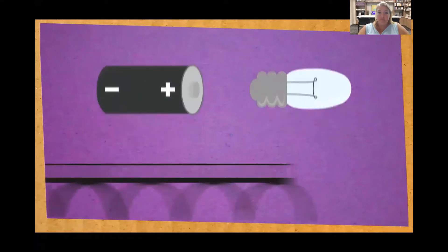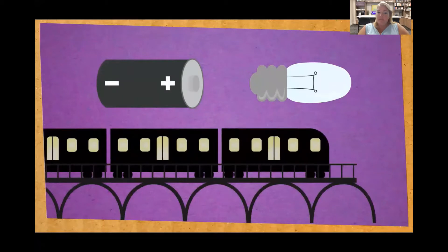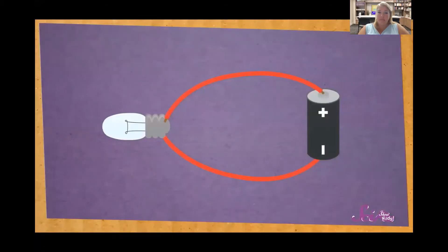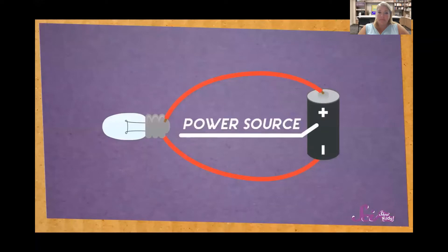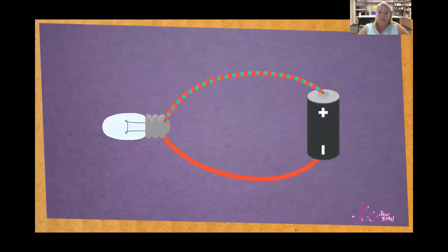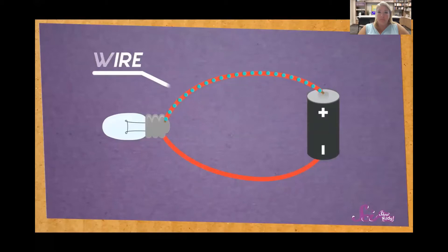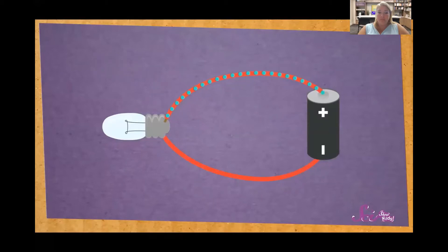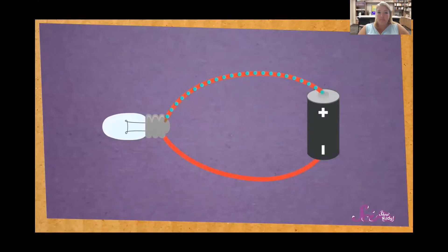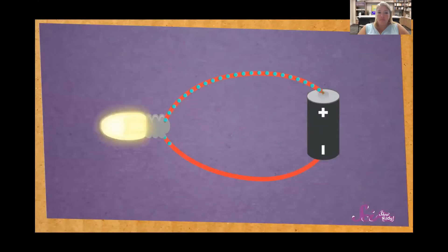It's a little like a train on train tracks. When there's no more track, the train stops. So let's see how a simple circuit works. The battery is what we call the power source — that is where the electricity comes from in this circuit. Electricity flows from the power source on the path of the circuit, and a lot of the time that path is made by some kind of wire. The circuit then leads to whatever we want to power. In this circuit, that's a light bulb. As the electricity goes through the bulb, the bulb lights up.